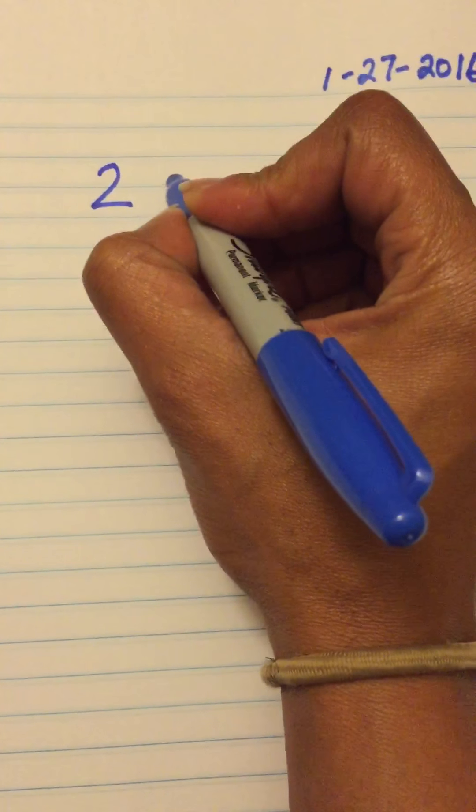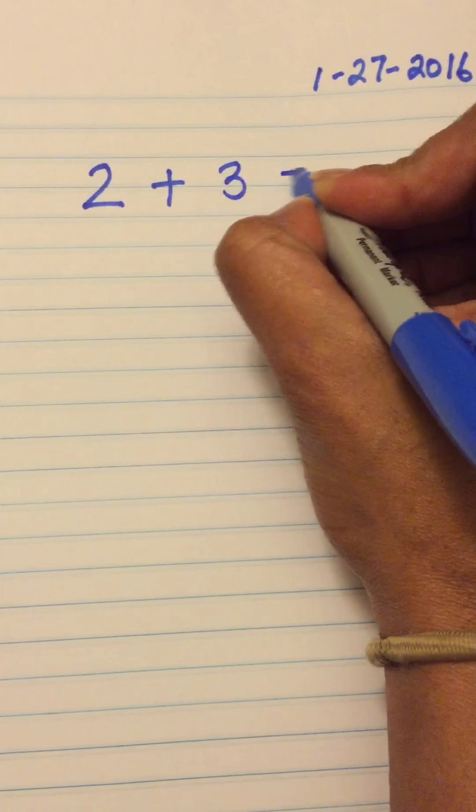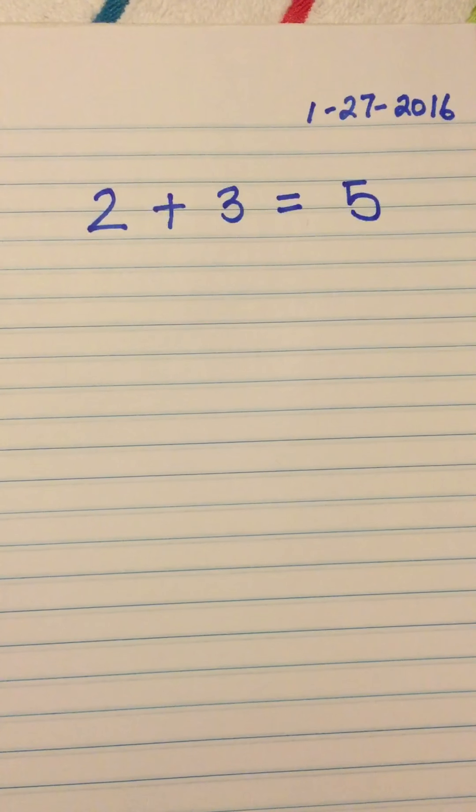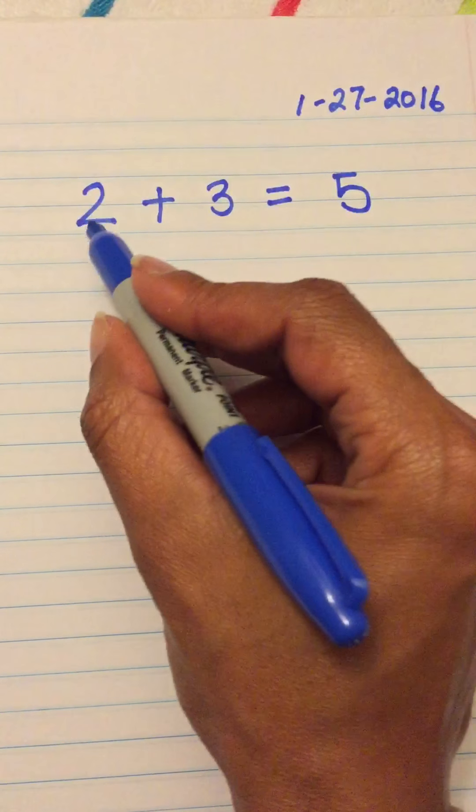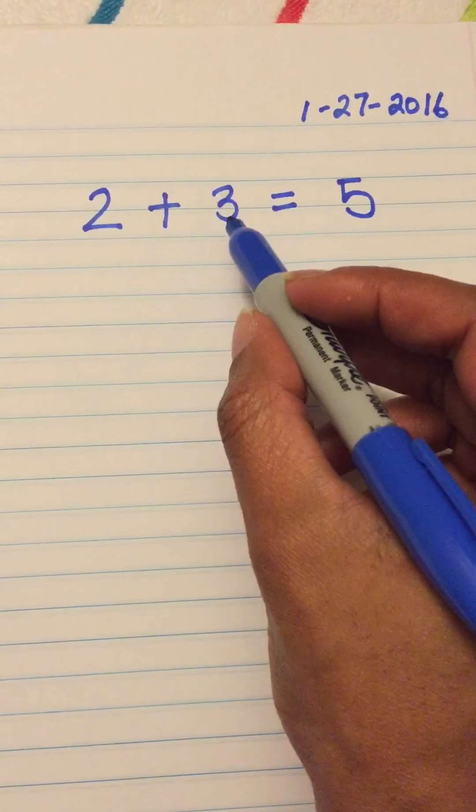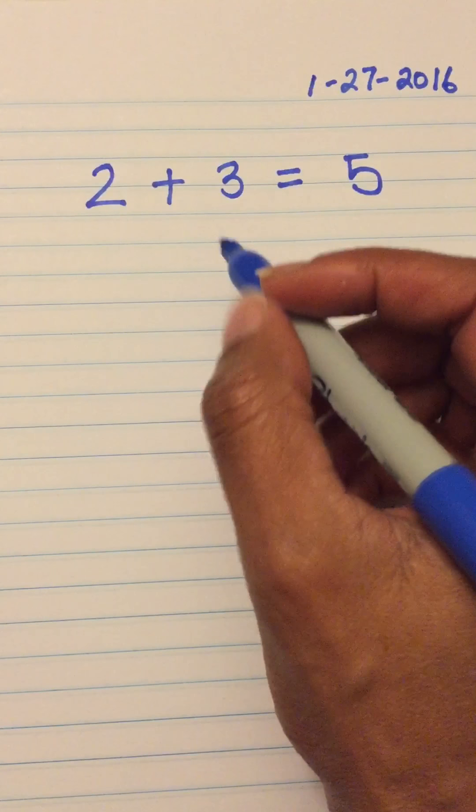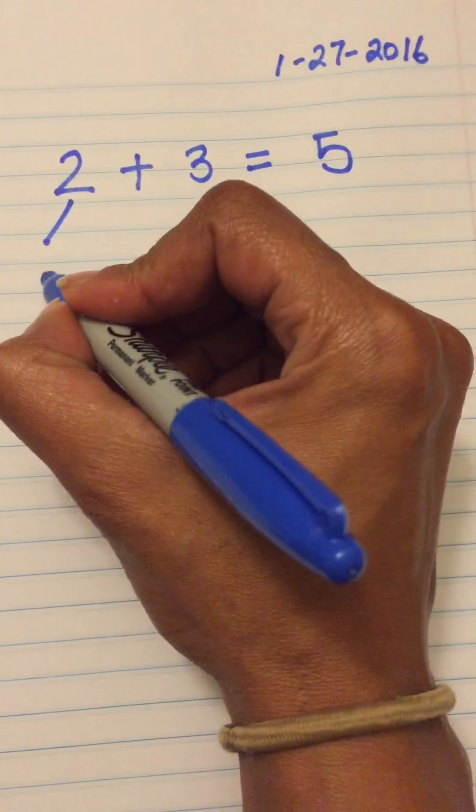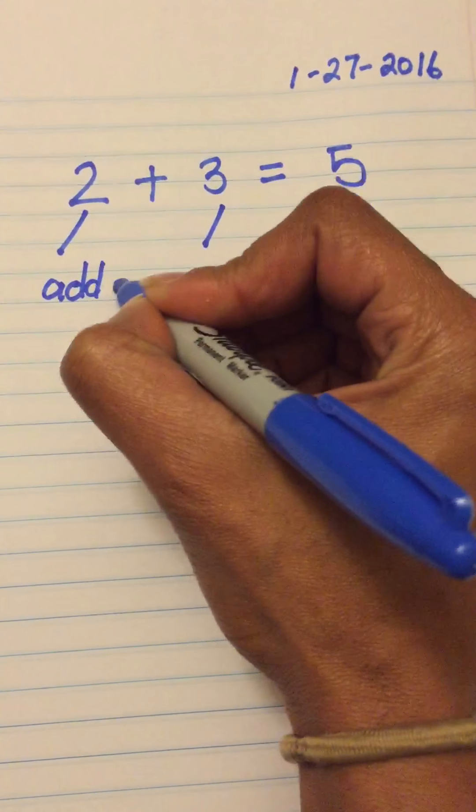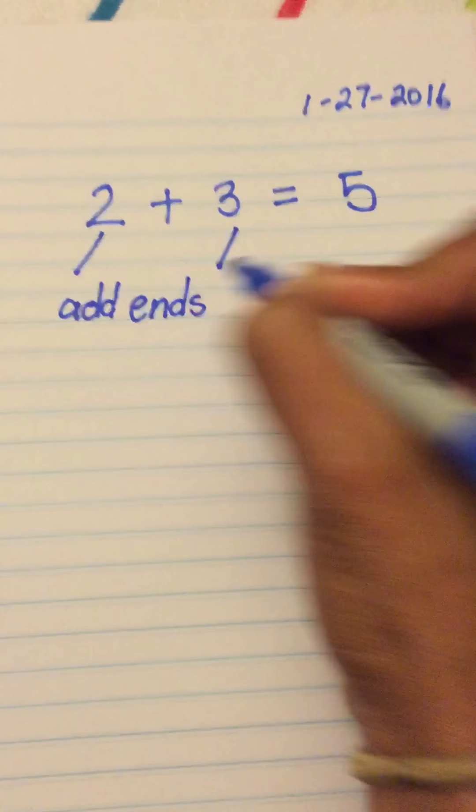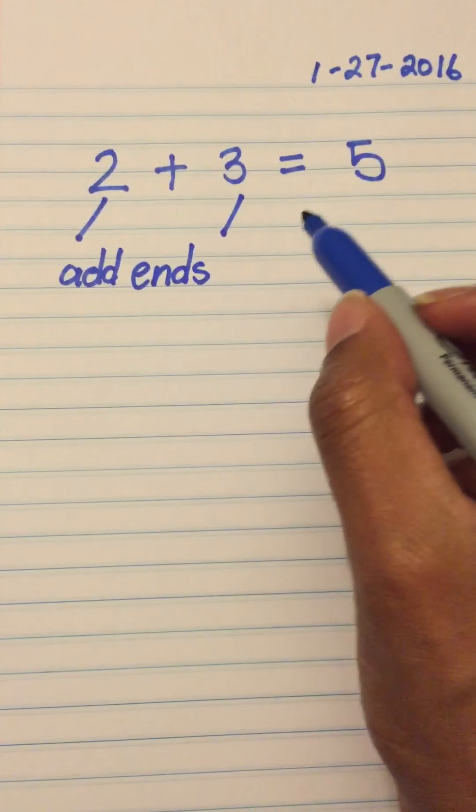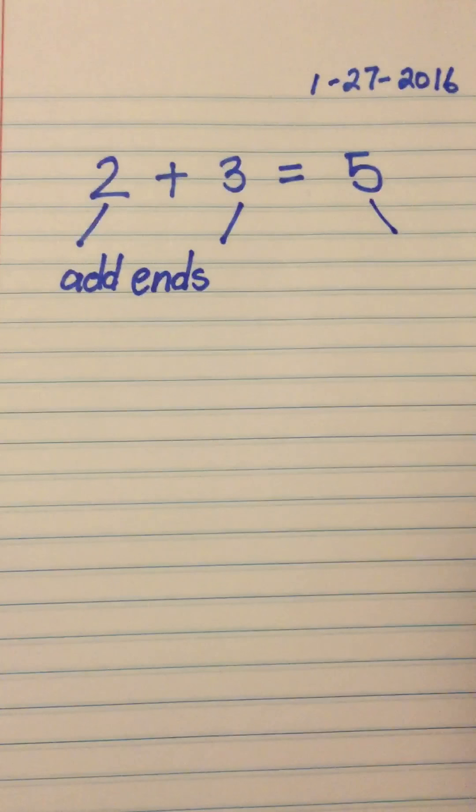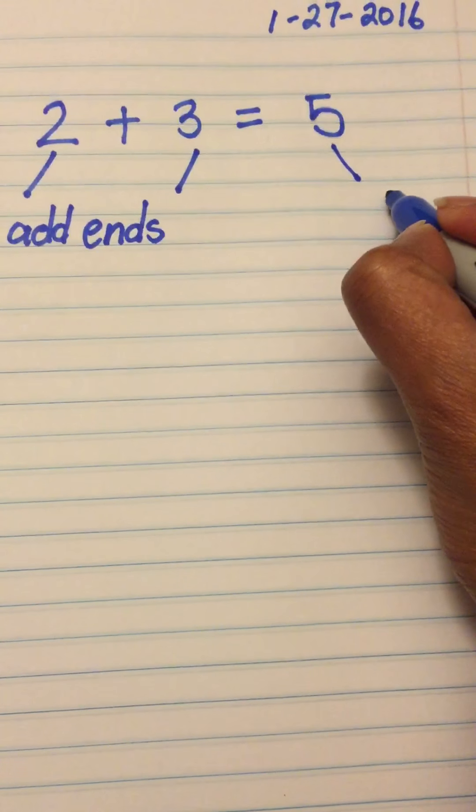Here is a number sentence. Remember, we learned that these two numbers, the two and the three, are called addends. So, let's go ahead and label our number sentence. Remember, the two and the three are addends. When we add the two and the three together, we get five. Let's remember that that's called our sum.